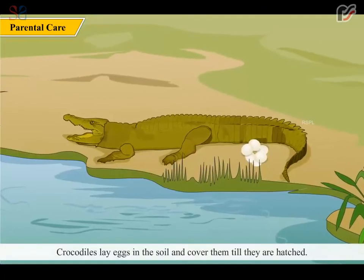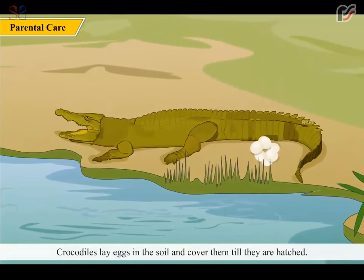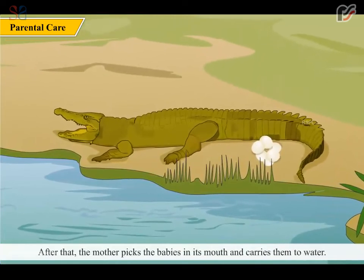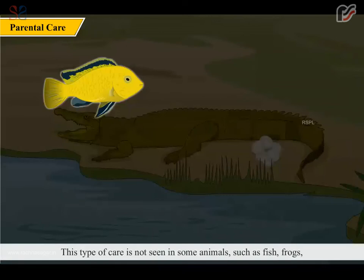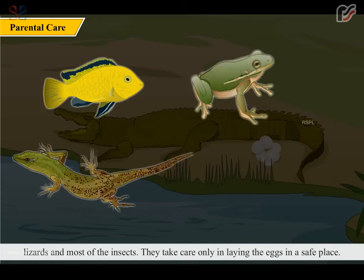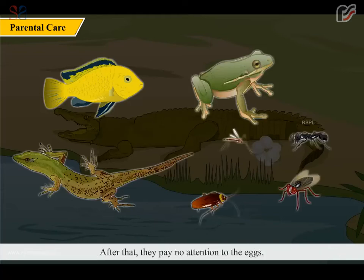Crocodiles lay eggs in the soil and cover them till they are hatched. After that, the mother picks the babies in its mouth and carries them to water, and guards them for several months. This type of care is not seen in some animals such as fish, frogs, lizards and most insects. They take care only in laying the eggs in a safe place. After that, they pay no attention to the eggs. As a result, many eggs and young ones are eaten up by other animals.